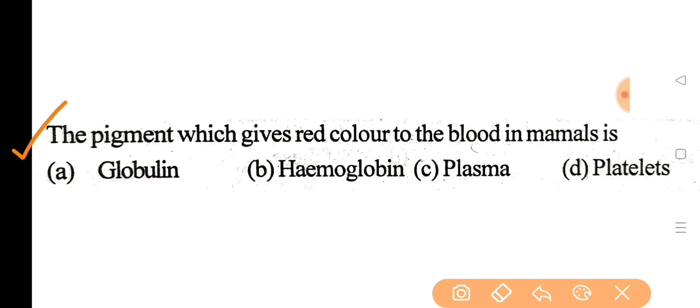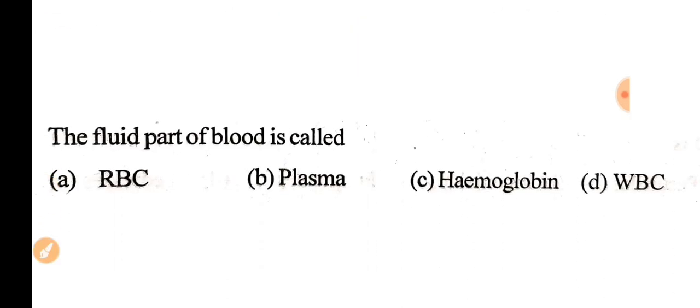Next question: the pigment which keeps red color to the blood in mammals is? Correct answer is option B, hemoglobin. Next question: the fluid part of blood is called? Correct answer is option B, plasma.